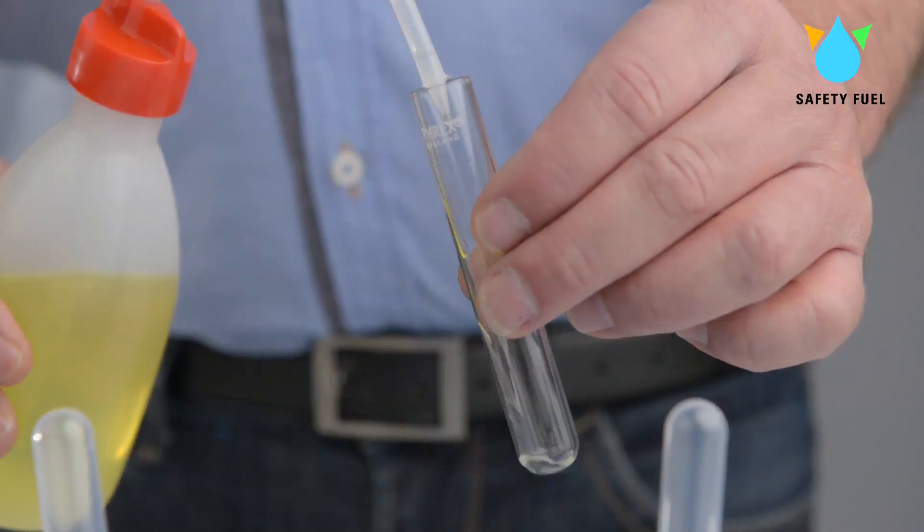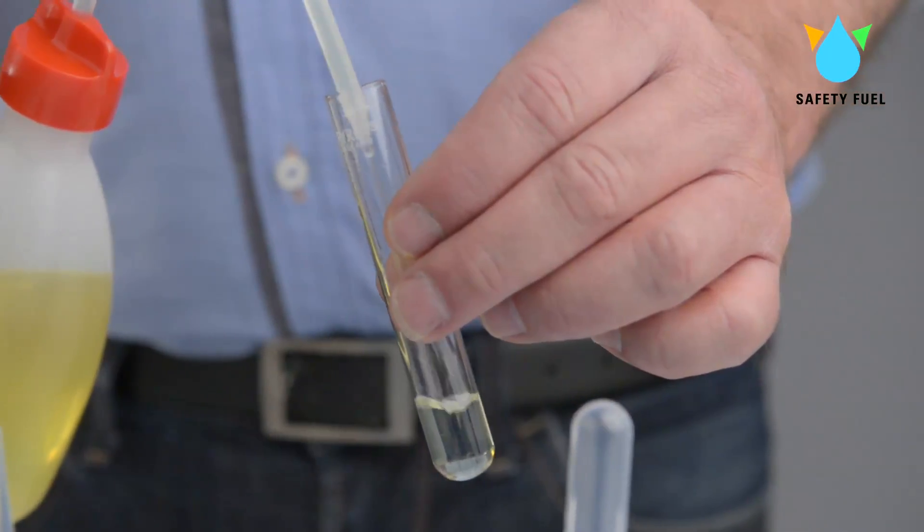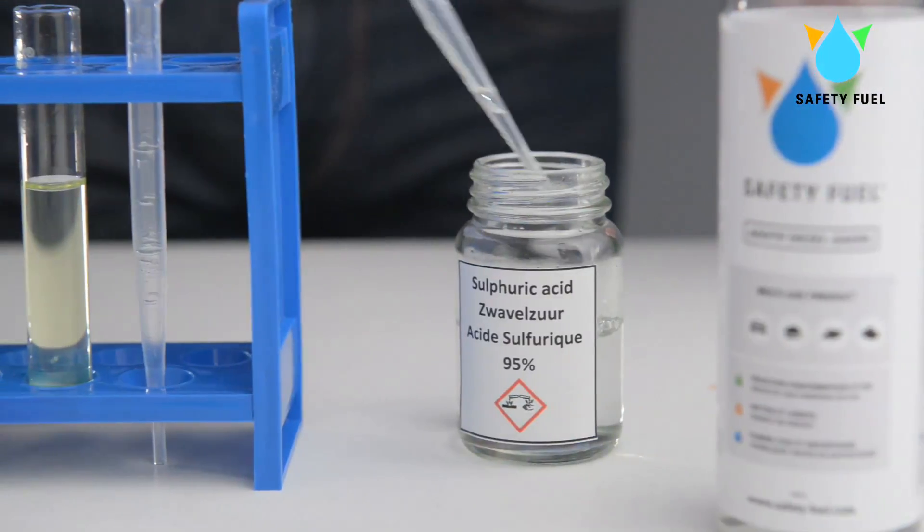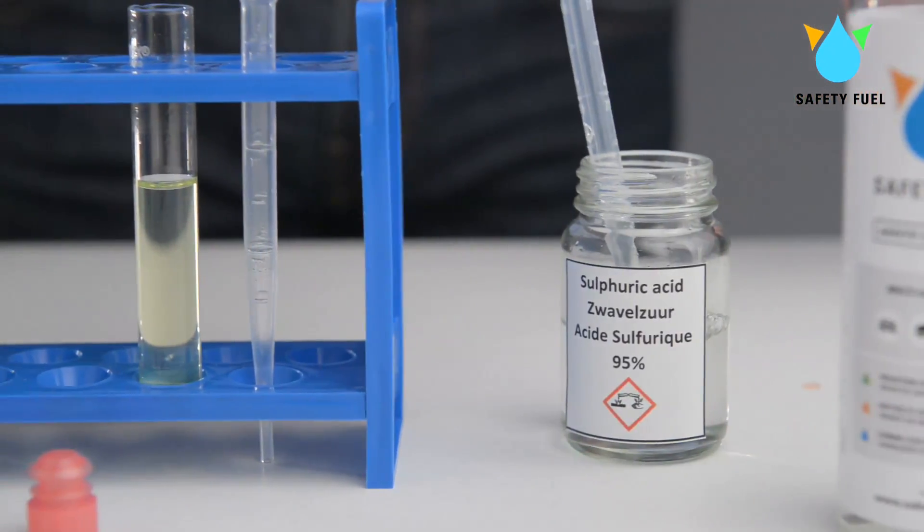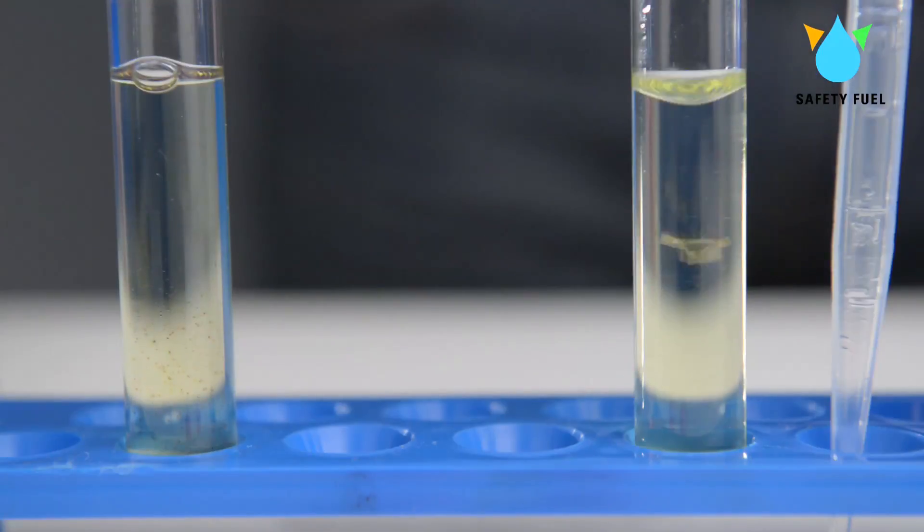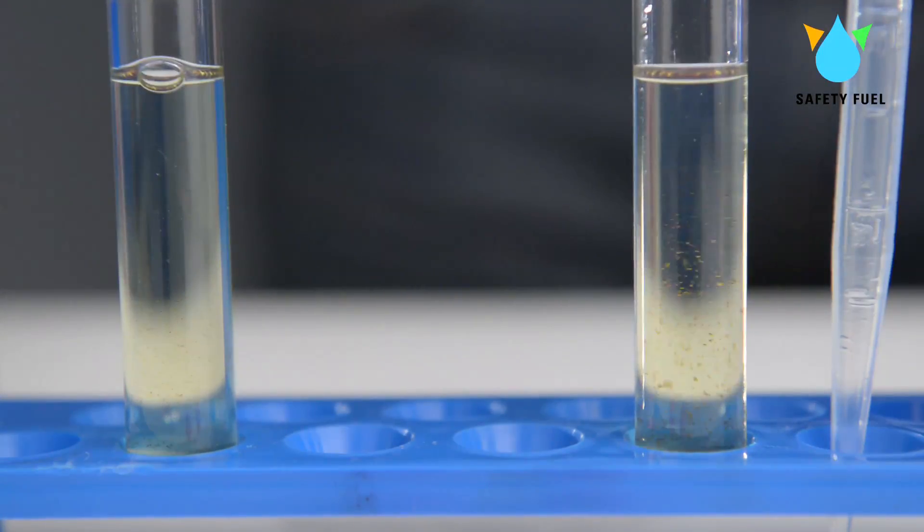We fill two test tubes with regular diesel fuel. We add a strong oxidizing acid. This simulates the oxidizing produced by the chlorinated trioxides that are generated by the combustion of diesel fuel.